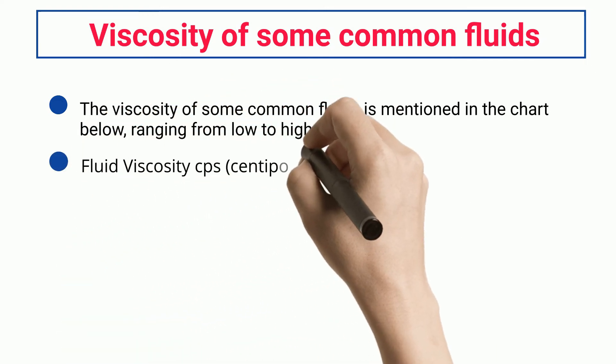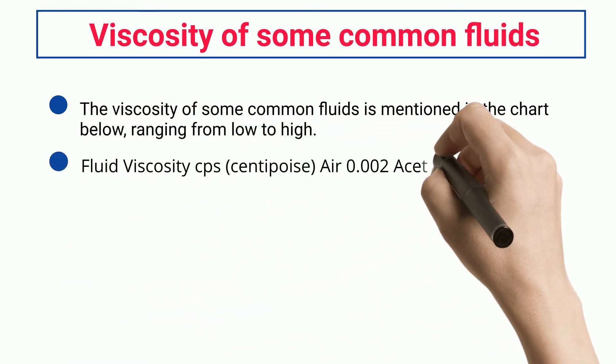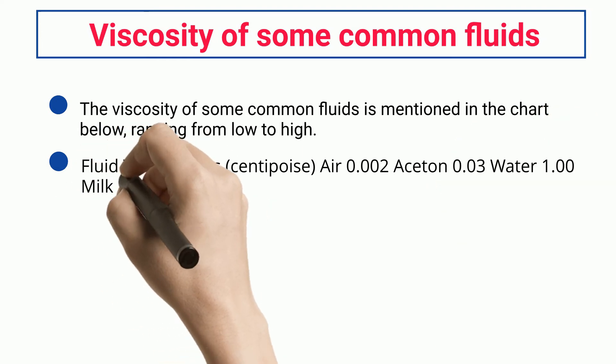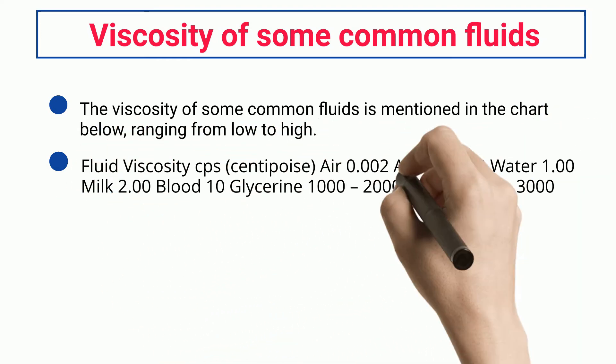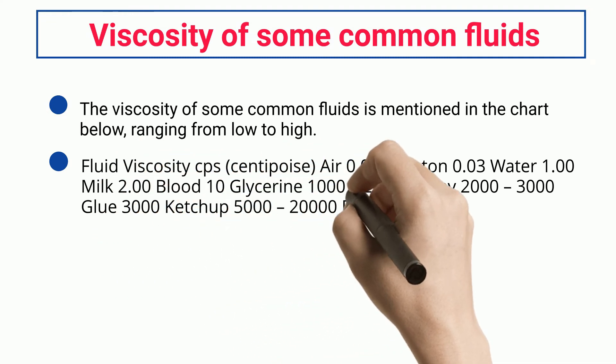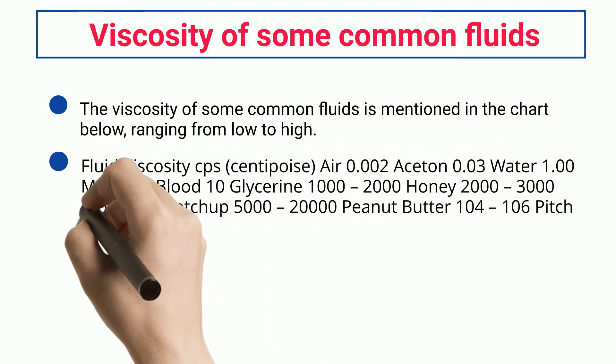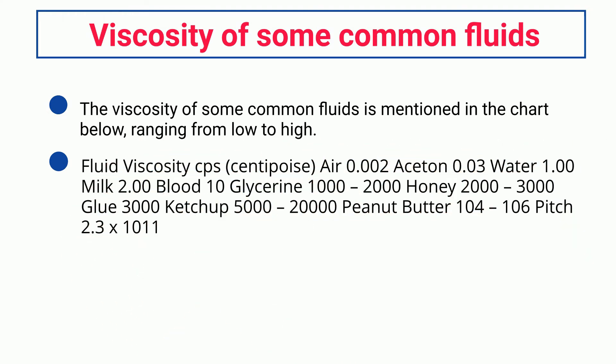Fluid viscosity in centipoise (CPS): air — 0.002; acetone — 0.03; water — 1.00; milk — 2.00; blood — 10; glycerin — 1000–2000; honey — 2000–3000; glue — 3000; ketchup — 5000–20,000; peanut butter — 10⁴–10⁶; pitch — 2.3 × 10¹¹.